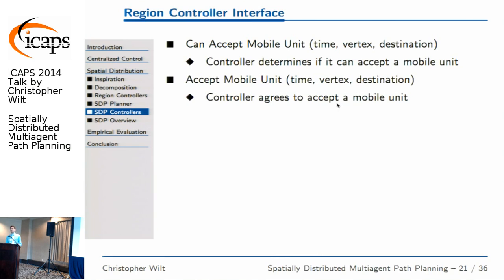These controllers basically have to perform two functions. The first is accepting mobile units — a controller has to be able to answer a question of the form: can I accept a unit at this particular vertex at this particular time going to that destination? That will either be possible, in which case it says yes, or it might not be possible — for example, if there's already another mobile unit at that location, so the new one would conflict with an existing commitment. Assuming it's able to do it, it responds yes. The other function is to be told to accept the mobile unit — essentially committing to take the unit through its region onto the next goal without anything bad happening.